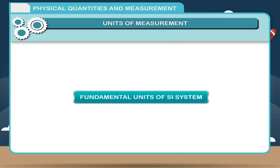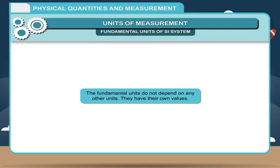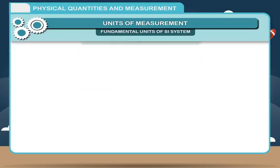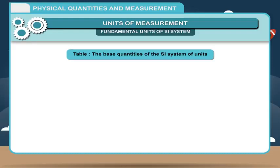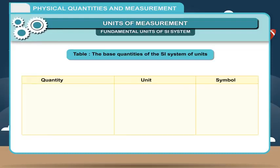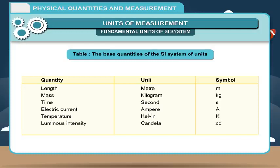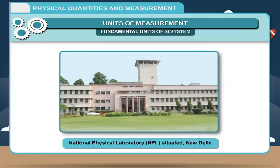Fundamental Units of the SI System: The fundamental units do not depend on any other units — they have their own values. The SI system has 7 fundamental units: Length (metre, m), Mass (kilogram, kg), Time (second, s), Electric current (ampere, A), Temperature (kelvin, K), Luminous intensity (candela, cd), and Amount of substance (mole, mol). In our country, the National Physical Laboratory (NPL), situated in New Delhi, is authorized to maintain the national standards for all basic units in India.